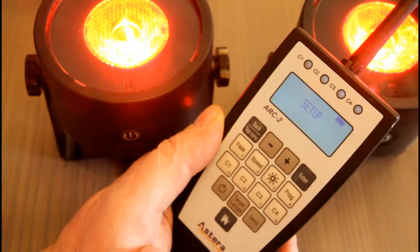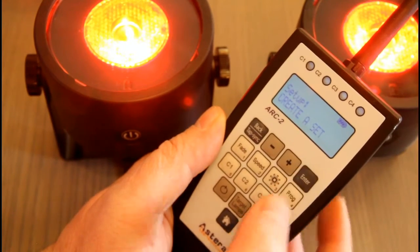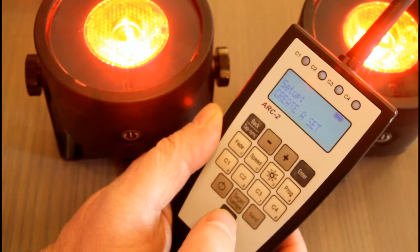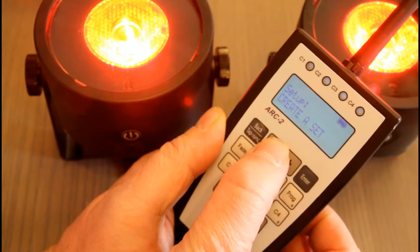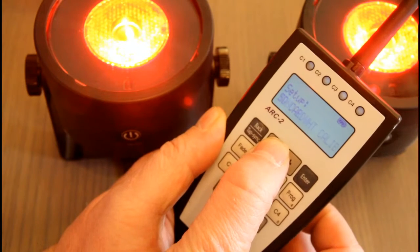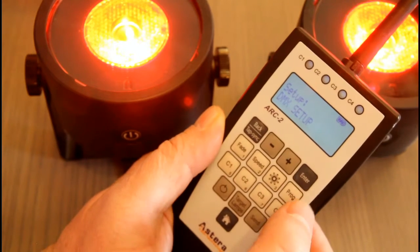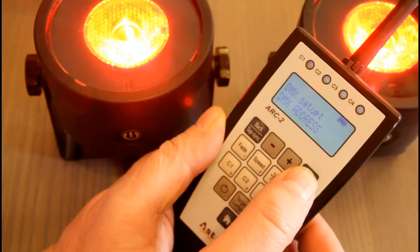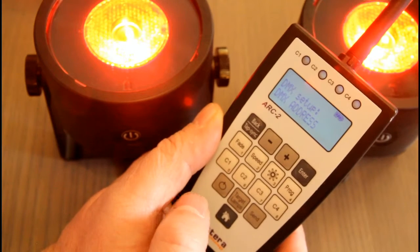Next, I'm going to hit the minus button to get to the setup menu, and then I'm going to hit enter. Now I'm going to hit the minus button until I get to DMX setup. There we are. I'm going to hit the enter button, and we are now in the DMX setup menu.